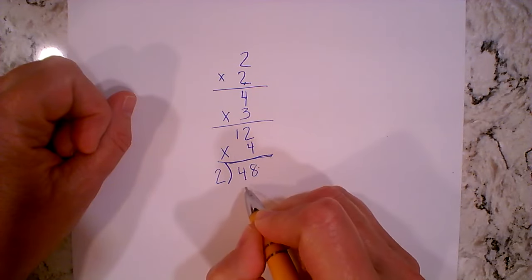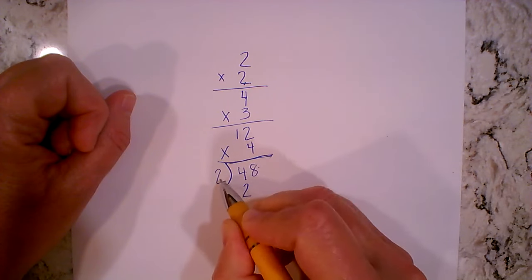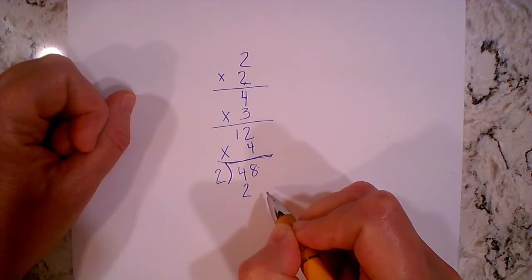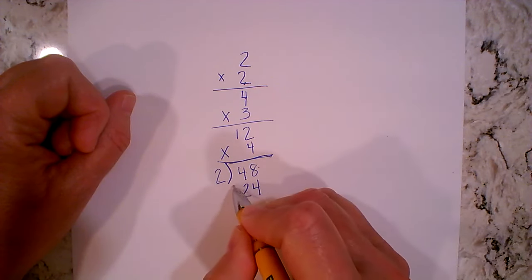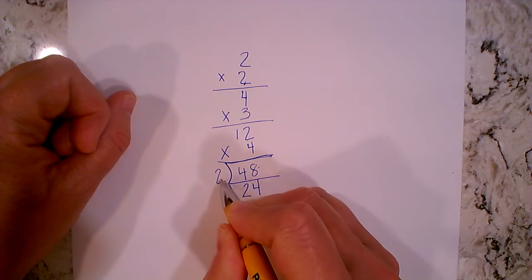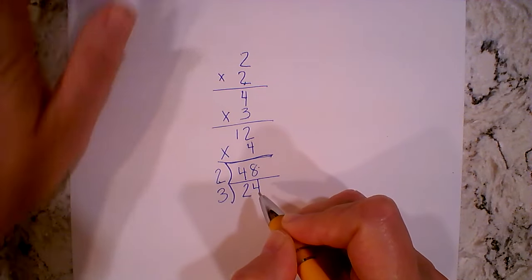Two goes into four how many times? Two times. We're going to write the two underneath the four as opposed to on top. Two goes into eight how many times? Four. And then we're just going to divide again. Our next number is three.